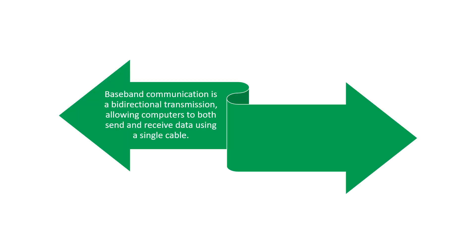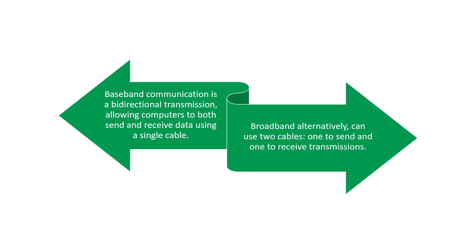Baseband communication is bidirectional transmission, allowing computers to both send and receive data using a single cable. Broadband can use two cables — one to send and one to receive transmissions.